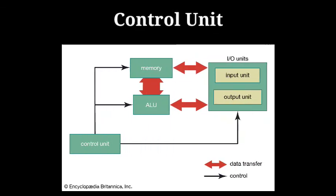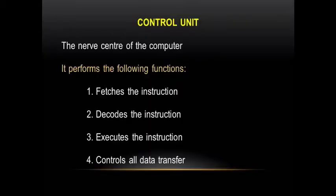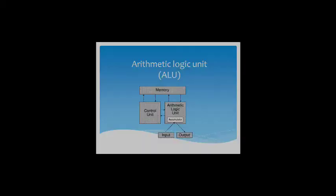Now, the control unit. The control unit is the nerve center of the computer. It performs the following functions: first, it fetches the instruction from the primary memory at the location pointed to by the program counter register; second, it decodes the instruction in the instruction register; third, it executes the instruction by sequencing a series of control signals to other components of the CPU; fourth, it controls all data transfer between various components.